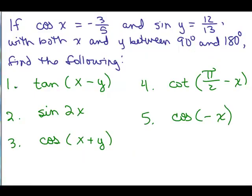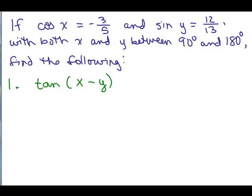All right, we're going to do the following problem. If the cosine of x is negative 3 fifths and the sine of y is positive 12 thirteenths with both x and y between 90 degrees and 180 degrees, find the following. So we're going to be using our different trig identities up through the double angle identities to answer the following, give the exact value.